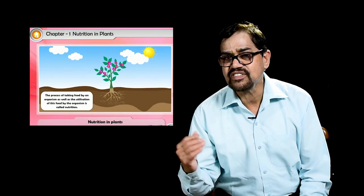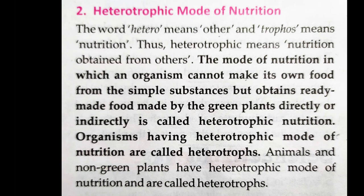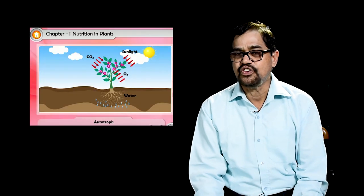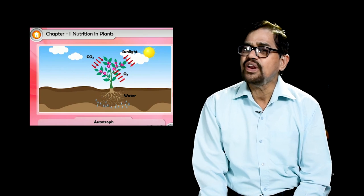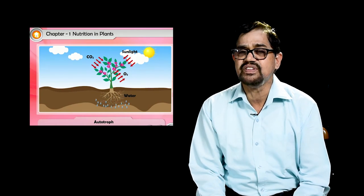Heterotrophic is the second mode of nutrition, and these plants cannot prepare their own food. It is the mode of nutrition in which an organism cannot make its own food from simple substances but obtains ready-made food made by green plants directly or indirectly. This is called heterotrophic mode of nutrition, and it can be of three types, which we will see later.